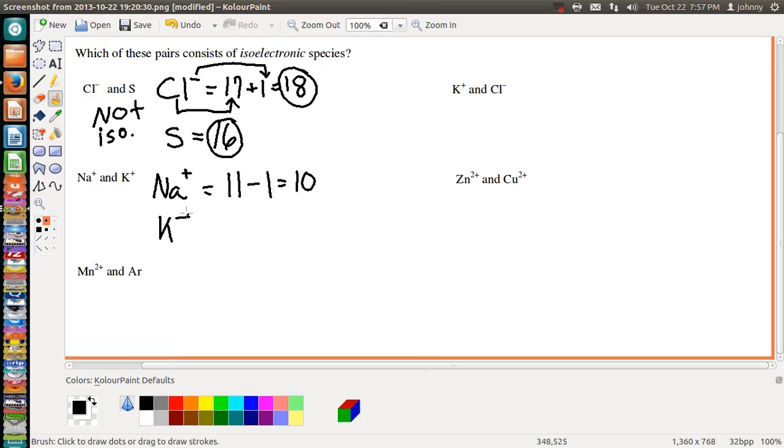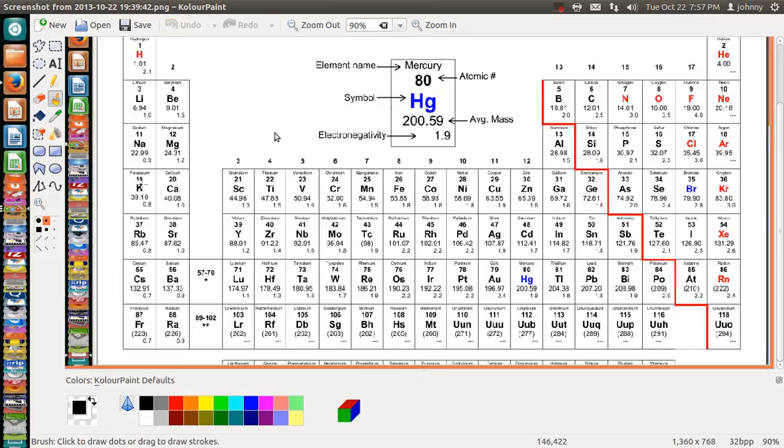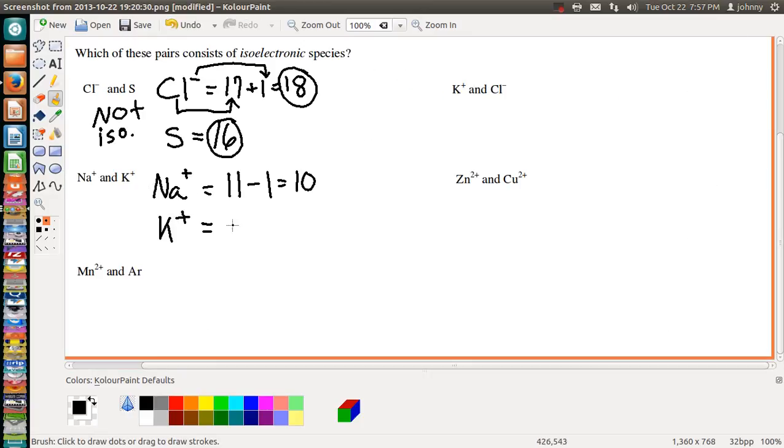Potassium that has a K⁺, if you look, potassium itself has 19 protons and it's also a plus 1. So remember, you've got to lose an electron and become positively charged. That gives you 18 electrons. These two are not isoelectronic because they both do not have the same identical numbers. This is not isoelectronic.